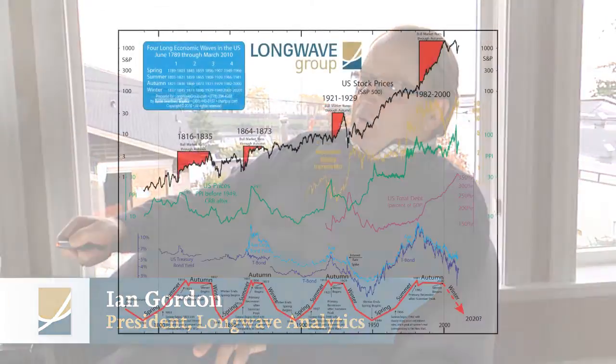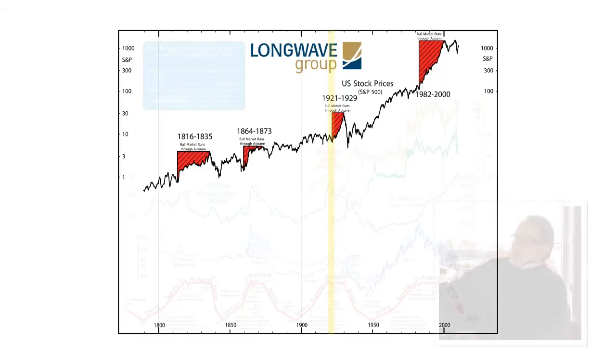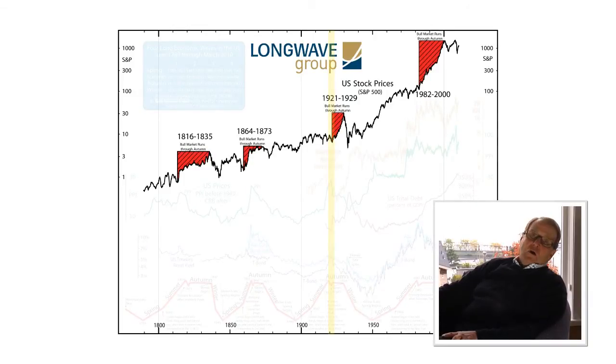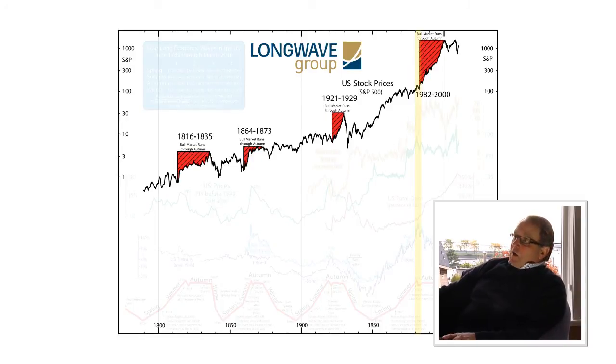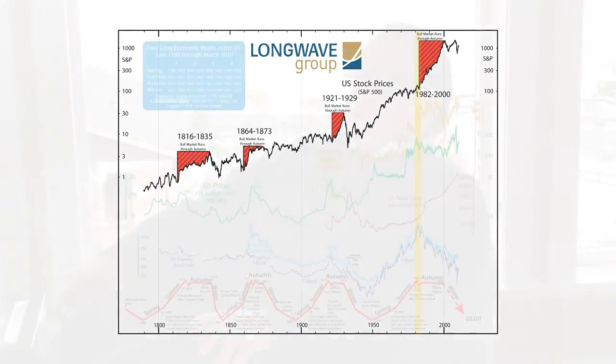The third indication that we're going into the autumn period of the cycle is the bear market that occurs. One occurred between 1920 and 1921, when the Dow lost 50% of its value, and this one — many of you might remember — between 1981 and 1982, when the Dow dropped from just above a thousand points to 777. That bear market in stocks is a third indication that we are going into autumn.